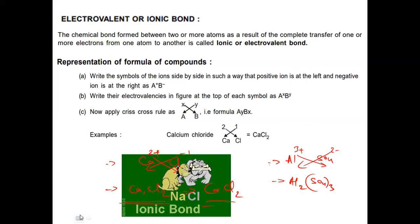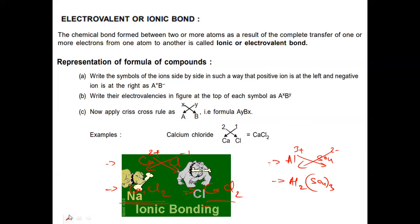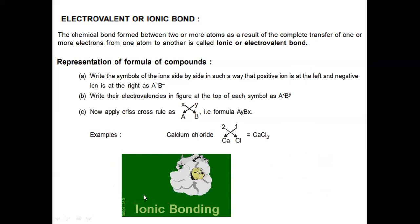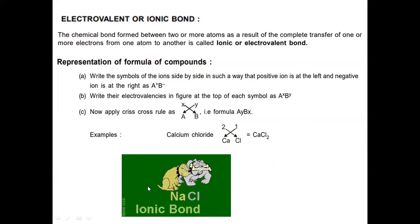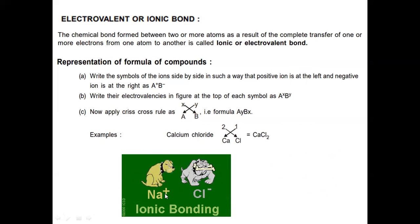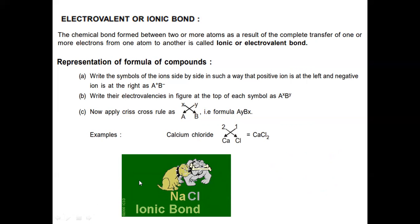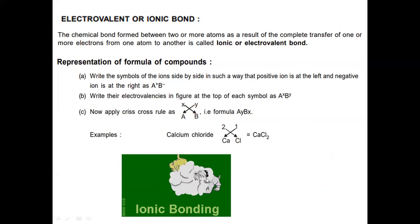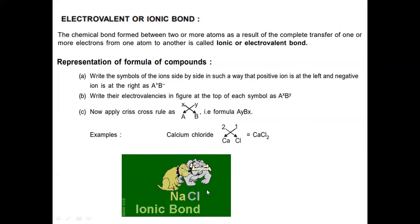We can observe the formation of the ionic compound NaCl. Before transferring one electron from sodium to chlorine, sodium is in the atomic state. After sodium donates one electron to chlorine, sodium becomes Na⁺ ion and chlorine becomes Cl⁻ ion.